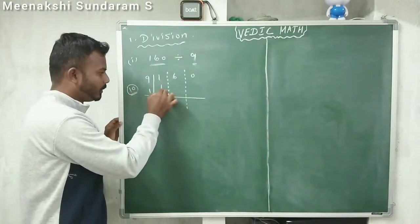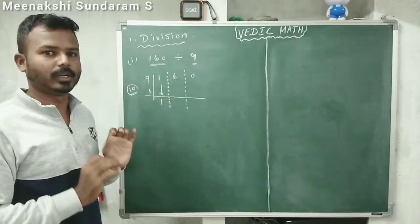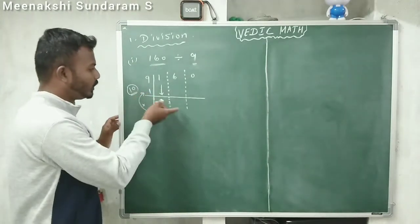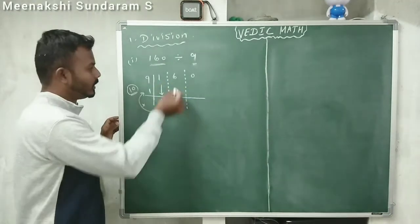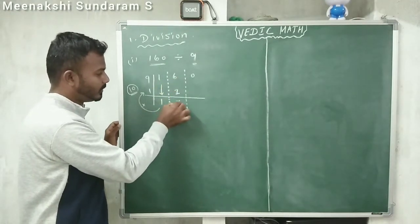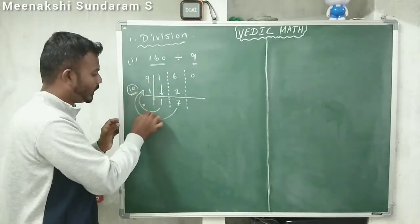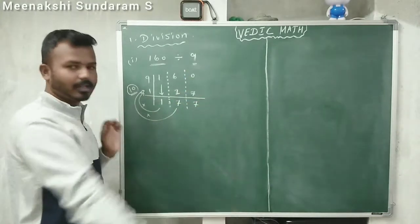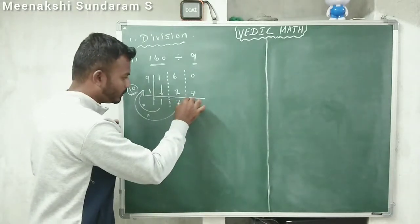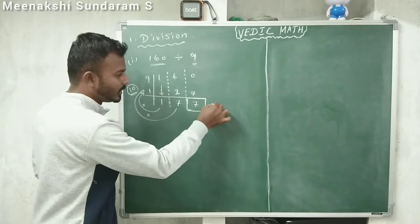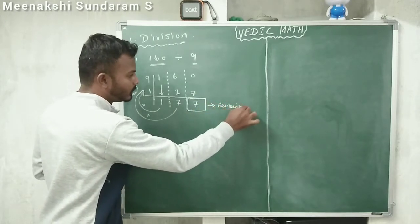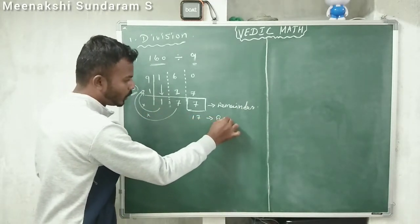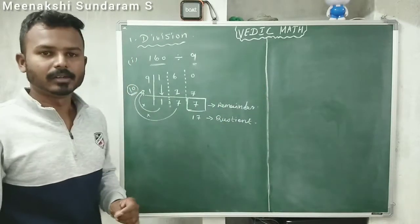Now, bring down the number 1 as it is. Multiply 1 into 1 — that is 1. Write the answer here: 1 times 1 is 1. Now add 6 plus 1, which is 7. Continue the same process: 7 into 1 is 7. Add 0 plus 7, which is 7. The last column value — 7 — is the remainder. The quotient is 17.